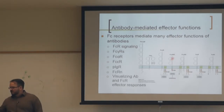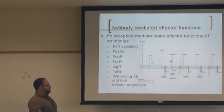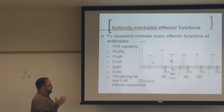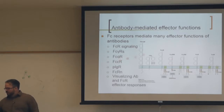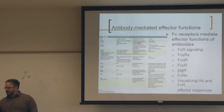Inhibitory FC receptors help prevent overexpression of antibodies when plenty are already present. FC gamma receptor 1 is associated with CD64 and is expressed on dendritic cells, monocytes, and B cells. You don't need to memorize all the associated cells, but note that FC receptors are expressed on both dendritic cells and B cells.